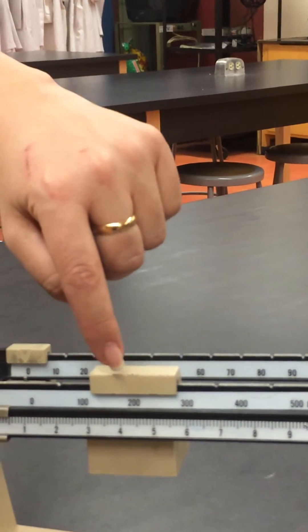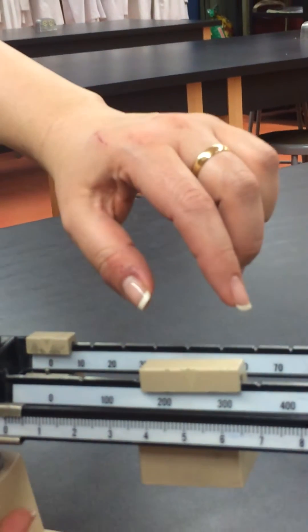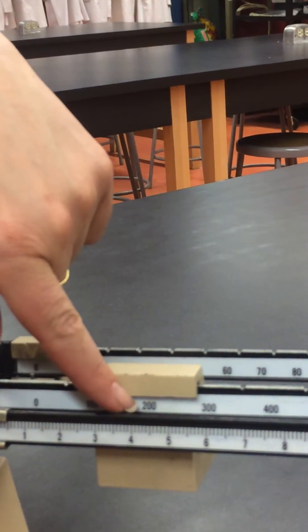And notice how the arrow is pointing at the number. Always. If you put it in the middle, it's wrong. It has to be right on the 200.